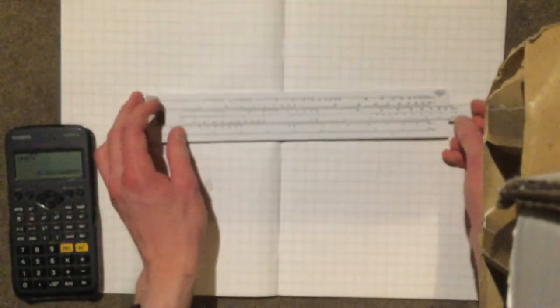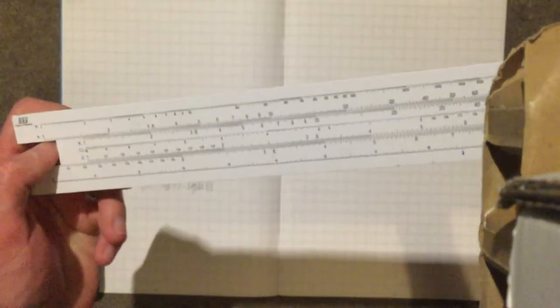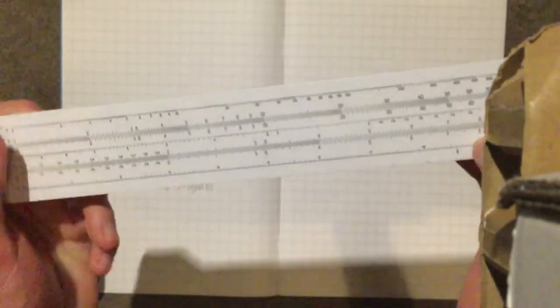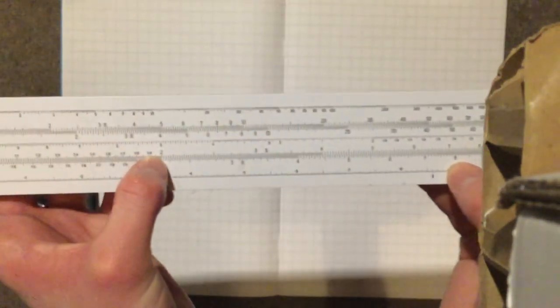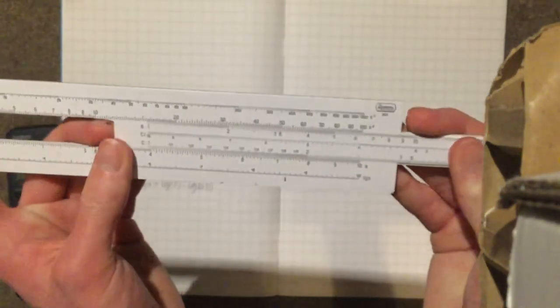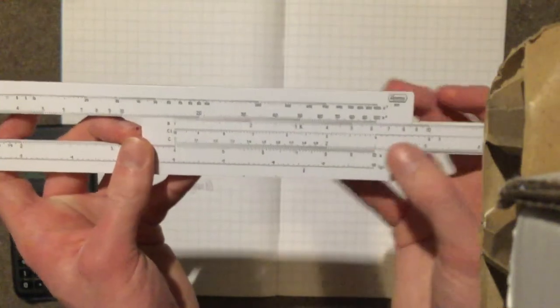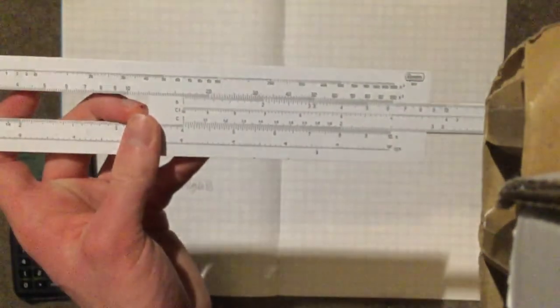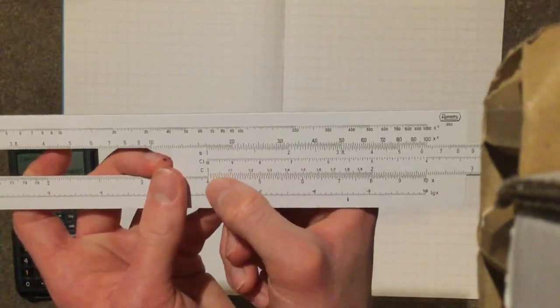Now let's have a quick look at division. Let's say we want to do the incredibly hard division of 8 divided by 2. So we find 8 on the D scale and 2 on the C scale. And we slide the 2 on the C scale along so it's at the 8 on the D scale. And we follow along to the 1, and we see we get 4.